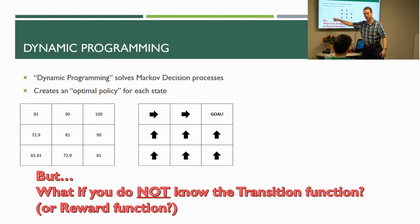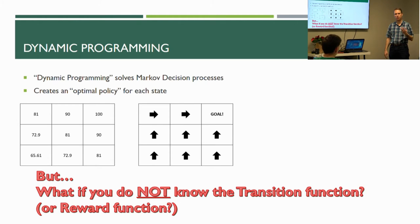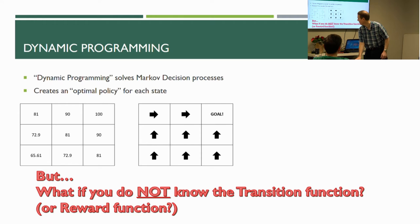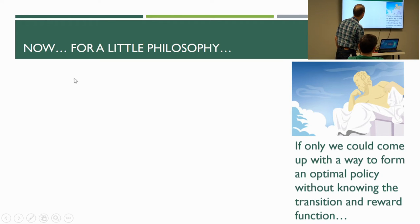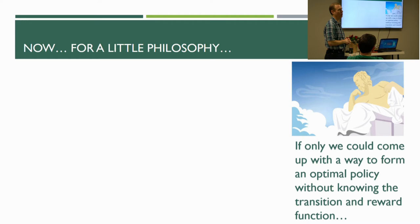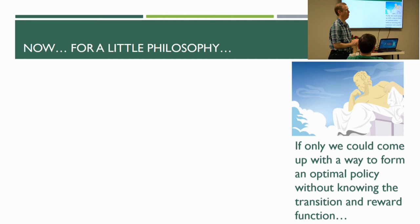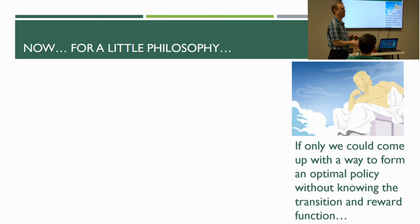With dynamic programming, you actually know the transition function and the reward function and can reference them to get utilities and turn them into an optimal policy. So, what if you don't know them? If only we could form an optimal policy without knowing the transition and reward function — that would be very powerful, because in theory any problem can be put into a Markov decision process. If we had a magic algorithm that didn't require knowing those functions, we could solve every problem as a Markov decision process.